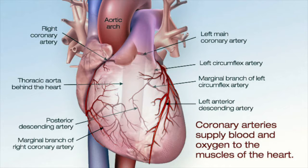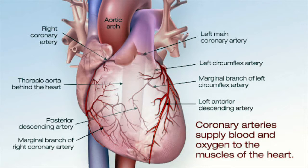A heart attack occurs when the blood flow that brings oxygen to the heart muscle is severely reduced or stopped. This happens because coronary arteries that supply the heart with blood can slowly become thicker and harder from a build-up of fat, cholesterol, and other substances called plaque.